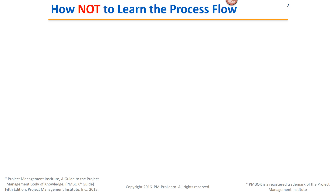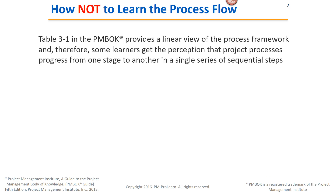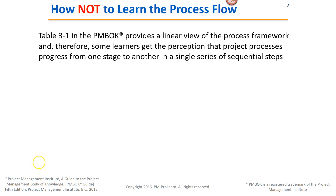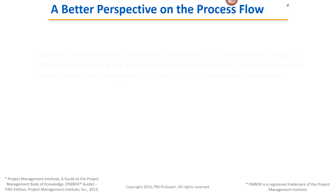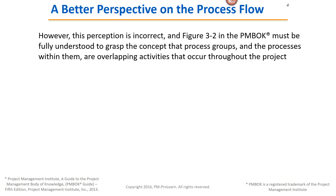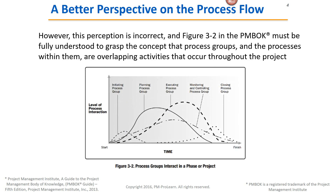So let's talk first of all about how not to learn the process flow. Table 3, TAC 1 in the PMBOK Guide is a great chart, but it provides a very linear view of the process framework, and therefore some learners get the perception that project process has progressed from one stage to another in a single series of sequential steps. However, this perception is incorrect, and Figure 3-2 in the PMBOK must be fully understood to grasp the concept that process groups and the processes within them are overlapping activities that occur all throughout the project.